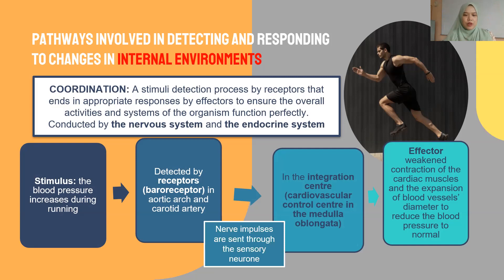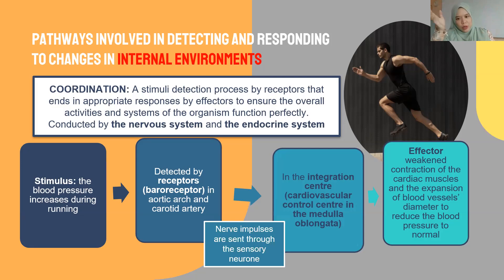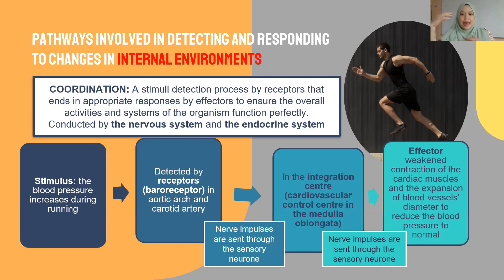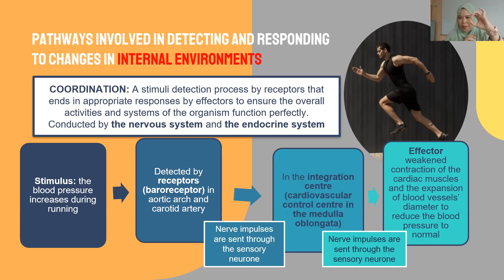This blood pressure increase will be detected by the receptor — in this situation, the baroreceptor, which is located in the aortic arch and also the carotid artery — it detects the increase in blood pressure and sends the impulse through the sensory neuron to the brain, which is the medulla oblongata. The medulla oblongata will integrate the information, and the nerve impulse is then sent through the motor neuron to the effector.